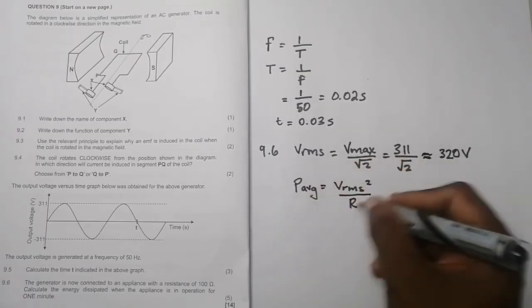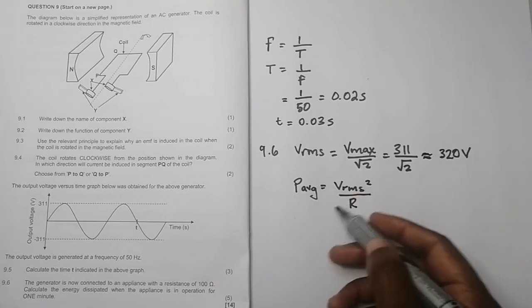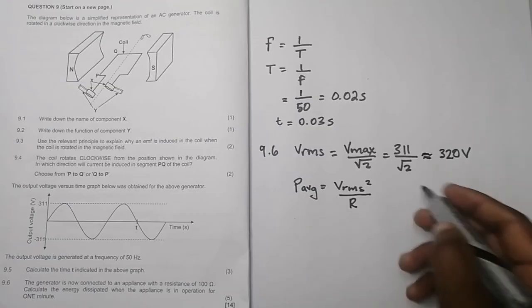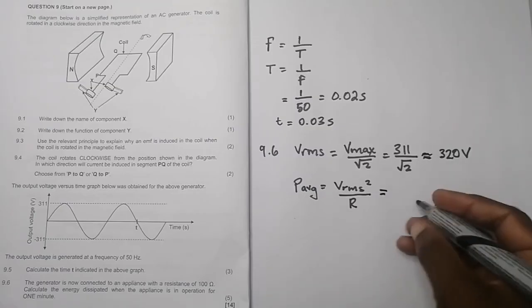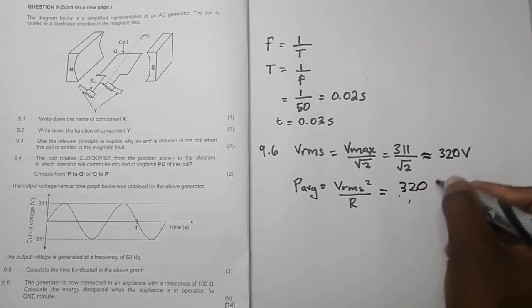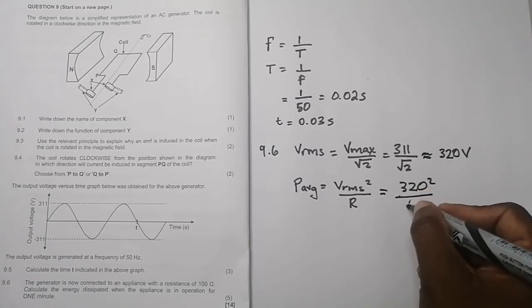Remember you're given these formulas, all you need to do is choose between the three. I chose this one because we've got V rms now and we are given the resistance. So we're going to say this is going to be 320 squared, by the way, divided by the resistance which is 100.